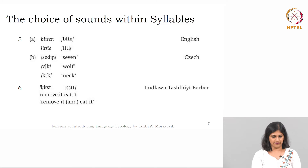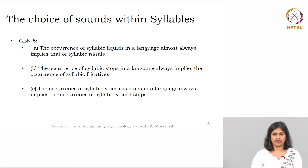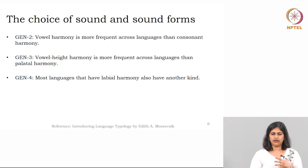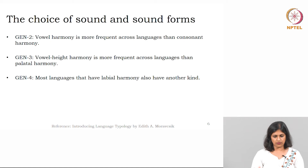We are not very sure — this could be an exception, and probably we will discuss such data at length later in another course. But as of now, you need to remember that in most cases, as far as harmony of sounds is concerned: vowel harmony is more frequent than consonant harmony; vowel height harmony is more frequent than palatal harmony; and most languages that have labial harmony will also have harmony of some other kinds — dental, nasal, labiodental, or others.